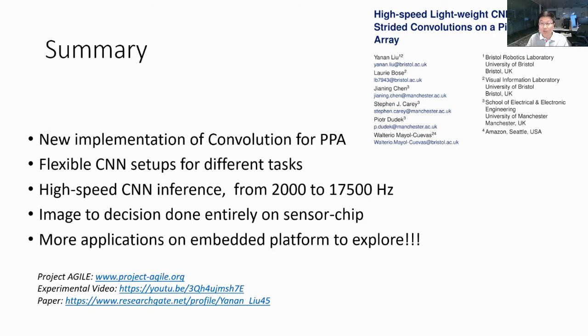In this work, we demonstrated CNN inference upon a PPA device across various tasks. Our proposed convolutional approach allows convolutions of strides 1, 2, and 4 enabling high inference speeds over 17,500 Hz on certain tasks to which stride 4 is applicable. The range of tasks illustrate the potential such PPA device may hold for future embedded applications.